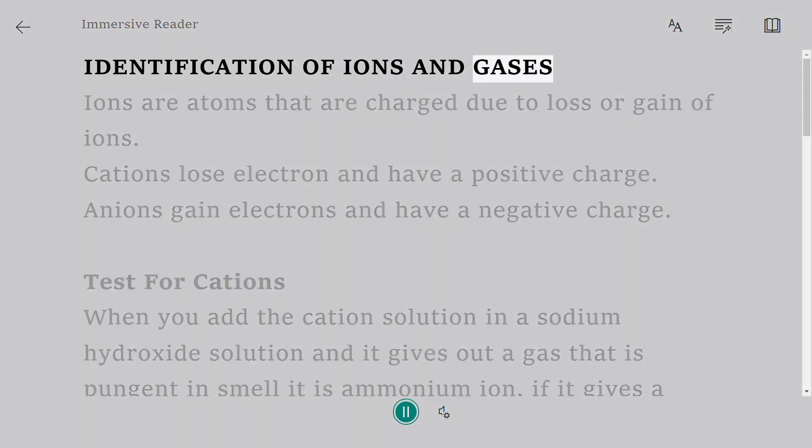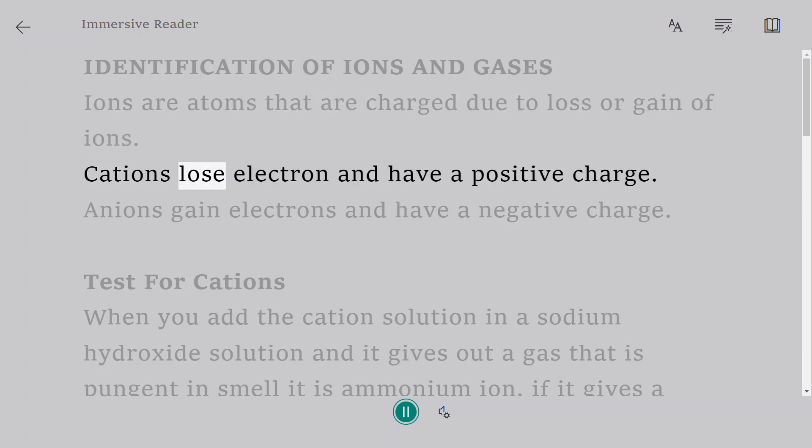Identification of ions and gases. Ions are atoms that are charged due to loss or gain of ions. Cations lose electrons and have a positive charge. Anions gain electrons and have a negative charge.